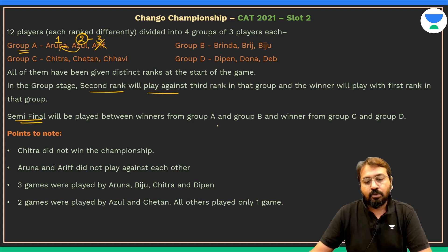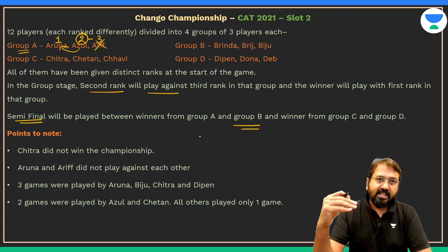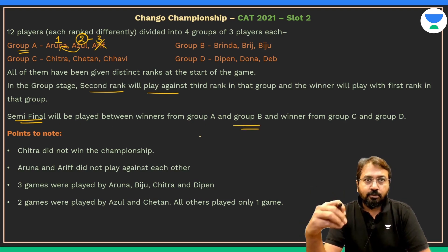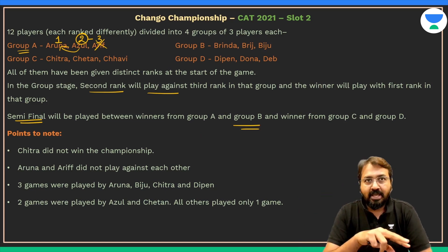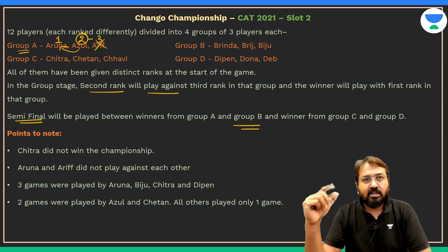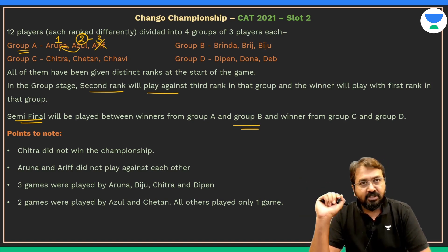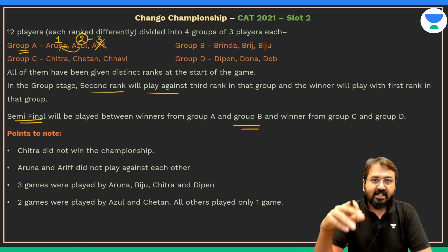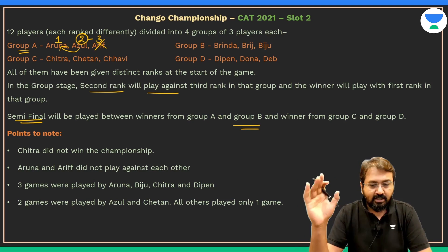Whoever wins the second game in each group proceeds to the semi-final. The semi-final is played between the winners of Group A and Group B, and similarly between the winners of Group C and Group D. The two semi-final winners then proceed to the final.